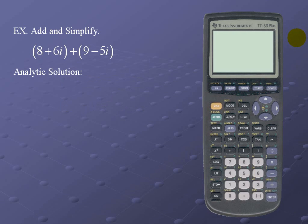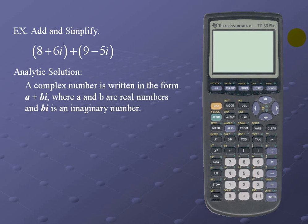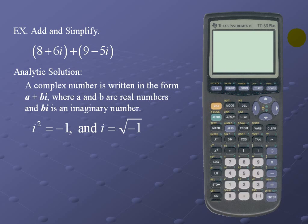Here's the analytic solution. A complex number is written in the form a + bi, where a and b are real numbers and bi is an imaginary number. Other facts that follow complex numbers: i squared is equal to negative 1, and i is equal to the square root of negative 1.